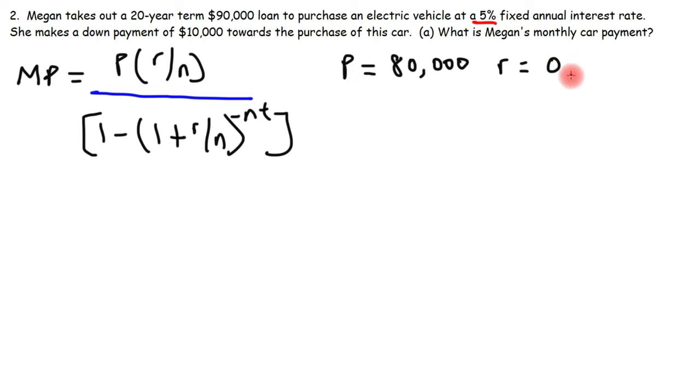Since we're still trying to calculate a monthly payment and not a quarterly payment or a weekly payment, n is going to remain 12. Now this is a 20-year term instead of a 10-year term loan, so t is 20 years.